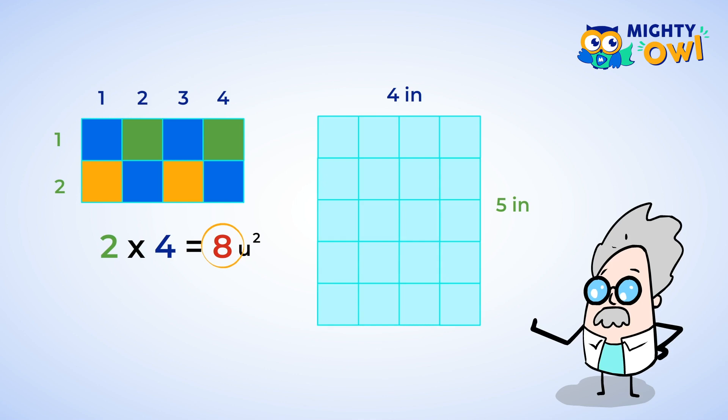And now we can multiply. Four multiplied by five is twenty. But let's double check by counting. One, two, three, four, five, six, seven, eight, nine, ten, eleven, twelve, thirteen, fourteen, fifteen, sixteen, seventeen, eighteen, nineteen, twenty. Yep, the rectangle has an area of 20 square inches.